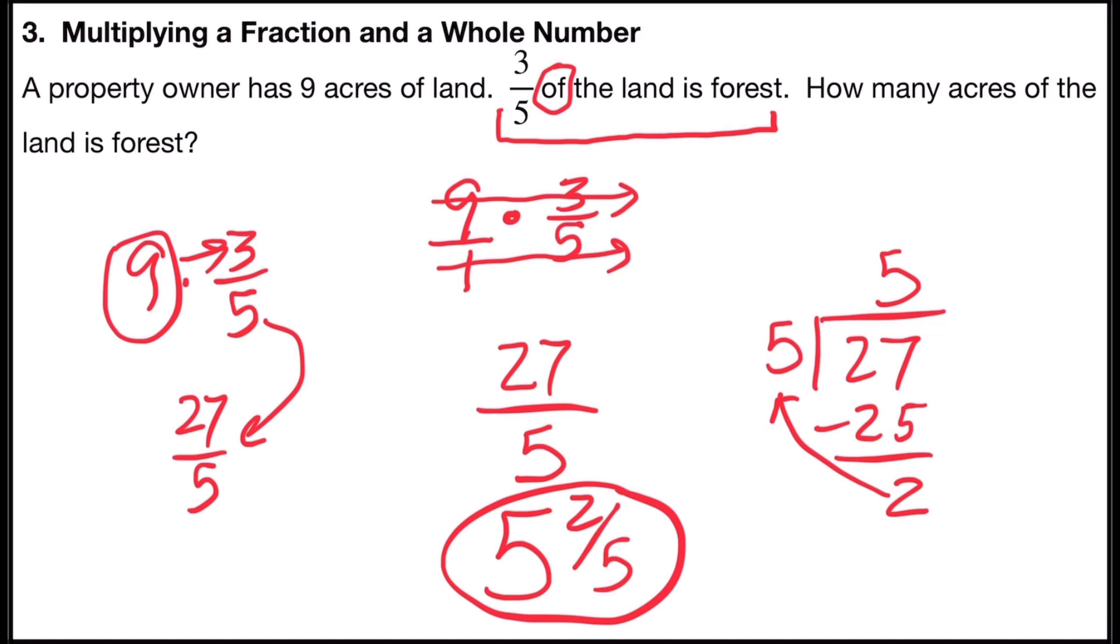So you don't have to necessarily put it over one, and it can shorten the time that it takes to solve the problem. You would still need to change it back to a mixed number, but that's going to always be the same process. So my answer is, either way, five and two-fifths.